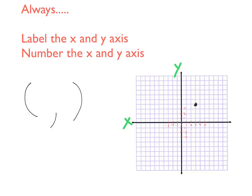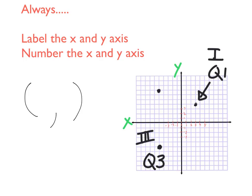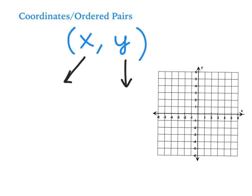Before we graph points, I just want to test you — can you tell me which quadrant a point is in? Coordinates, or ordered pairs, are always written with the x-coordinate first, then the y-coordinate. A way to remember that: x comes first in the alphabet, y comes next, so it's always x first, then comma y. The first number tells you to go either left or right along the x-axis. If it's negative, go left; if it's positive, go right.